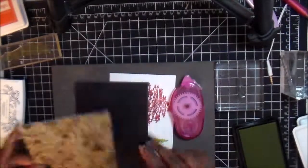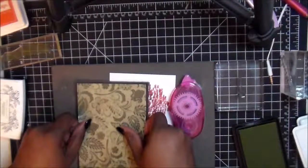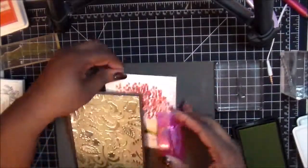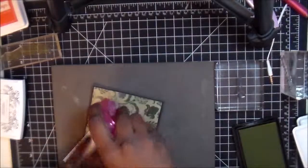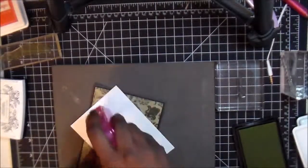And we're just still using the Tombow mono adhesive. And this piece of paper right here I'm using, I actually got from a pack of paper that was from Die Cuts with a View. I think I got it at Joanne Fabrics. I have a thing for pattern paper.